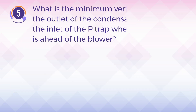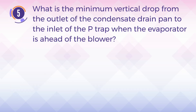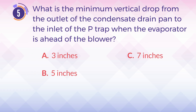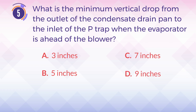Number 5. What is the minimum vertical drop from the outlet of the condensate drain pan to the inlet of the P-trap when the evaporator is ahead of the blower? A. 3 inches. B. 5 inches. C. 7 inches. D. 9 inches.